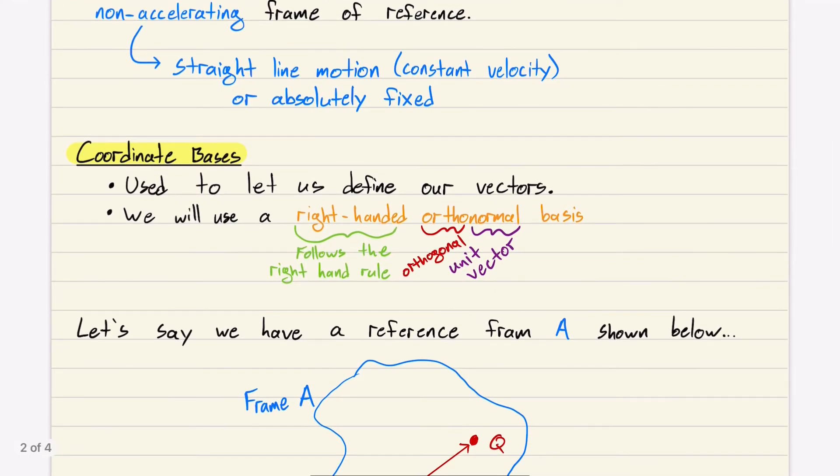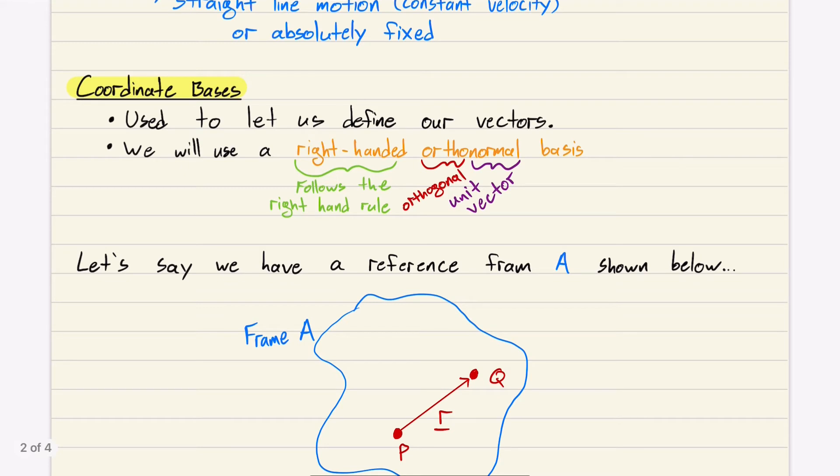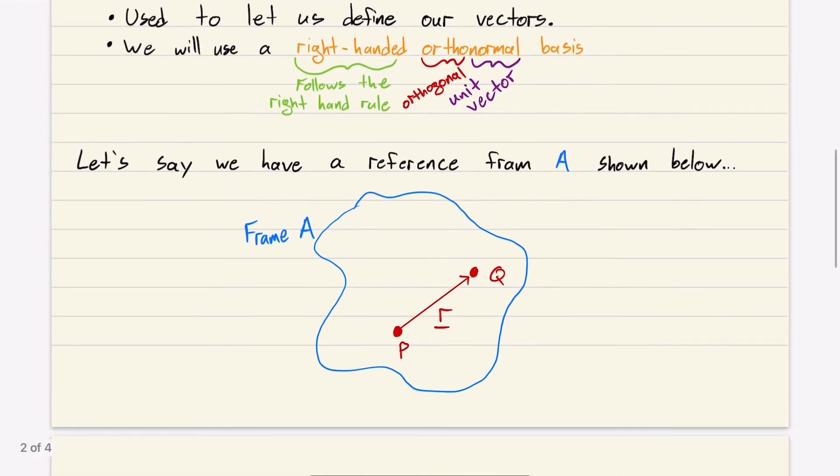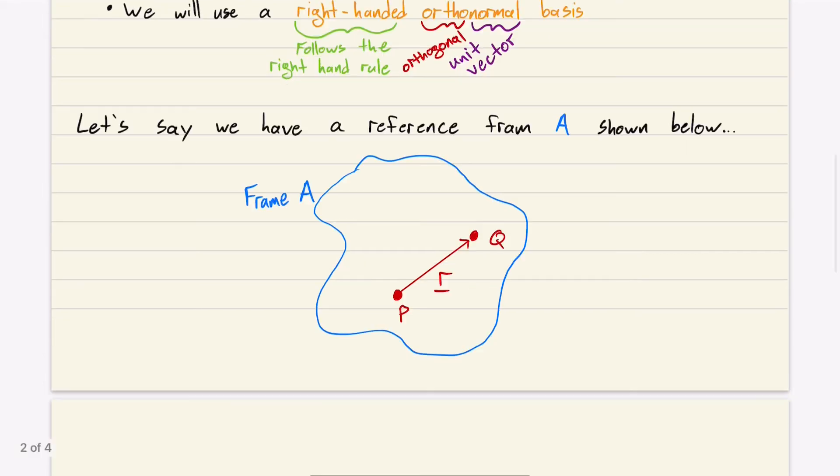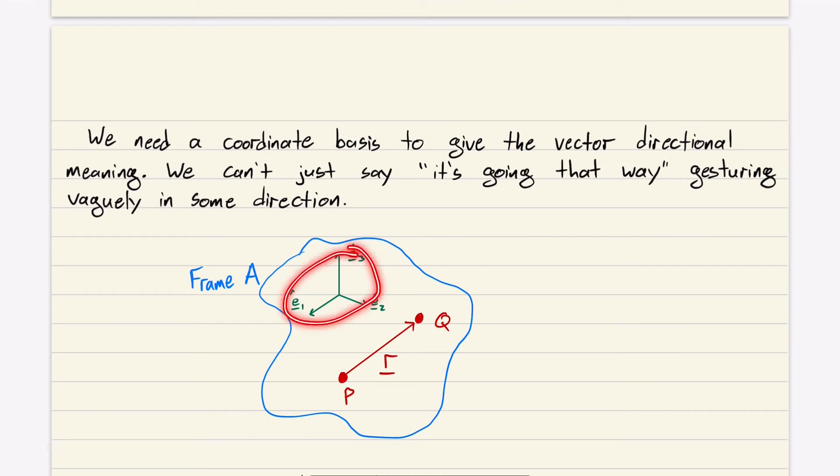Coordinate bases are used to let us define our vectors. This gives us the directionality component to take measurements. Say we have a reference frame A and it's this squiggle. My professor would call this a space potato. You drew a vector from point P to point Q. Now how do you define vector R? You can't just wave your hand and say it's going in that direction. You have to actually define it.